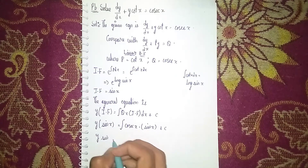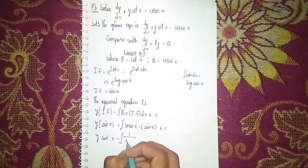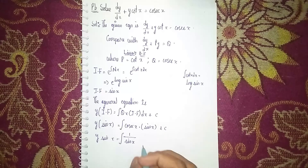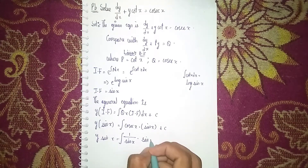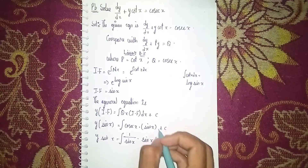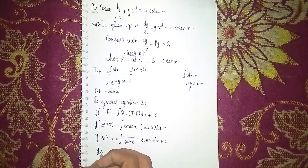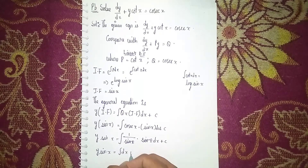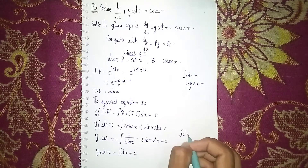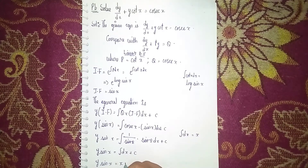Here y·sin(x) equals the integral of cosec(x) into sin(x) dx plus C. We can write cosec(x) as 1/sin(x), so 1/sin(x) times sin(x) gives 1. The sin(x) terms cancel, and we are left with y·sin(x) equals the integral of dx plus C, which equals x plus C.